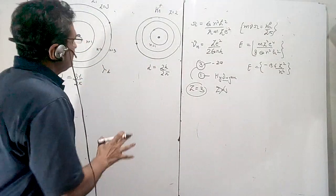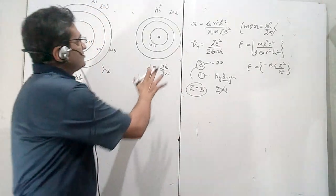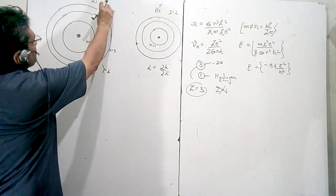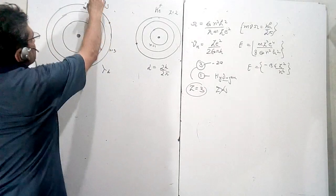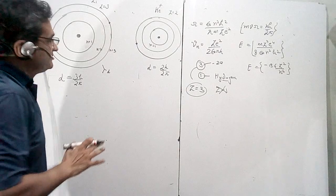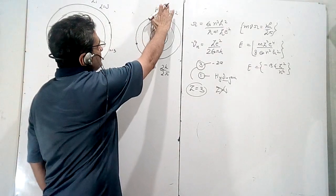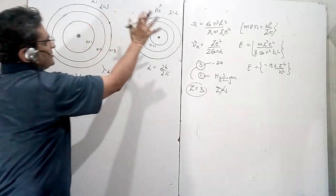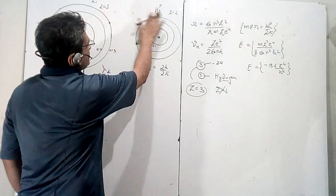The problem involves a doubly ionized lithium atom and a singly ionized helium atom. Doubly ionized means two electrons have been removed from lithium (z = 3), so one electron remains but z stays three. Singly ionized helium had two electrons; one has been removed, so one electron remains. Both are hydrogen-like: z = 3 for lithium, z = 2 for helium.